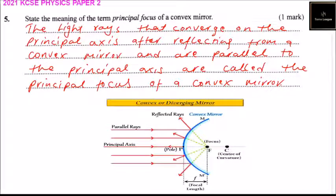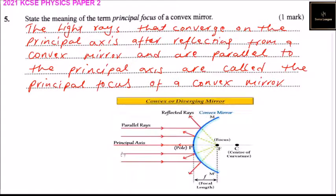So this is what we are calling the principal focus. These are rays that are parallel to the principal axis. You can see they converge to a point which we are calling the principal focus.